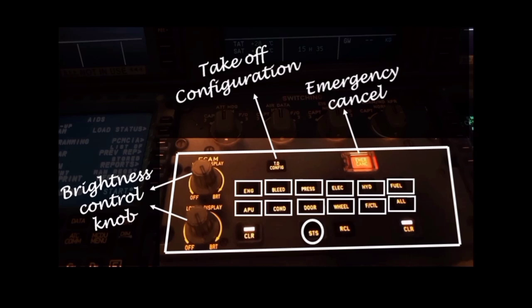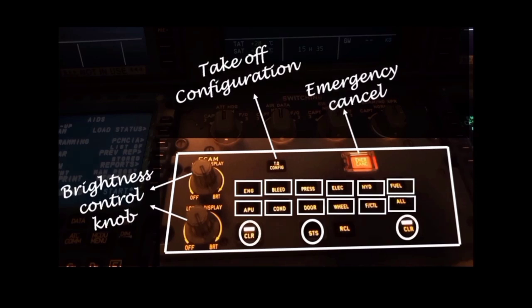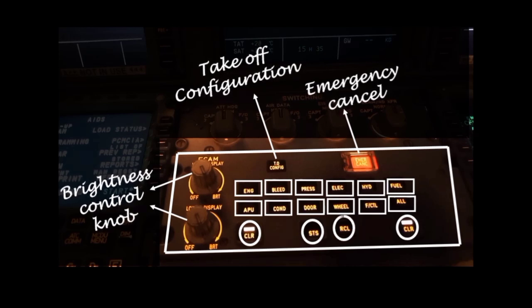The status page may be cleared by pushing the STS key a second time or by pushing the clear key. The clear key illuminates when there is an ECAM warning, caution, or status message. The recall key is pressed to recall warning and caution messages that have been cleared with the clear key or by automatic flight phase inhibition.